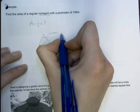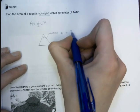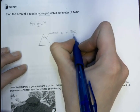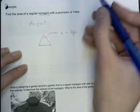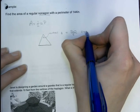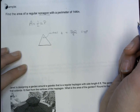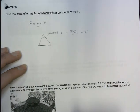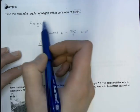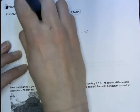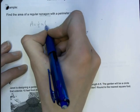So the central angle we can find by doing 360 divided by the number of sides. So if I do 360 divided by nine, I get 40 degrees. Now I do know the perimeter already, so I could plug that in here and say that the perimeter is 144.